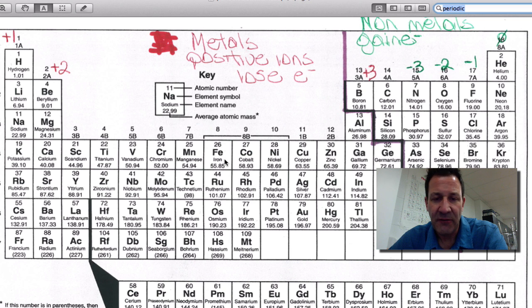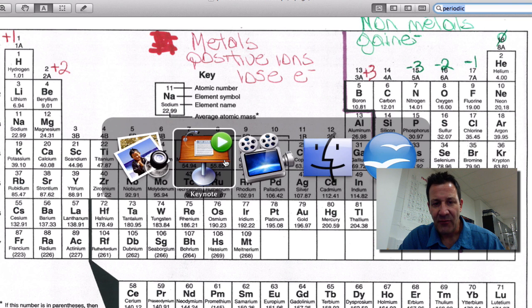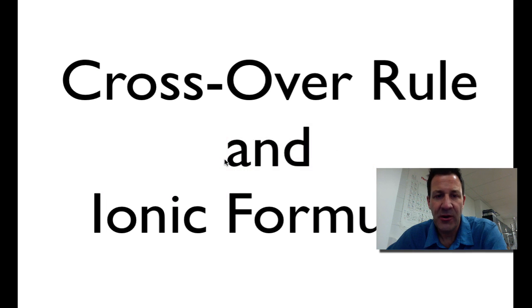And then you need to be aware of the transition metals and the polyatomic ions. Either you've memorized the polyatomic ions, or your teacher is going to give you a list of them, and we're going to use those when we name our compounds.